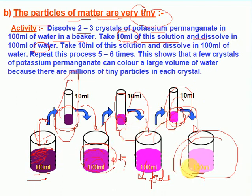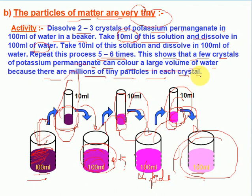Repeat this process five to six times. This shows that a few crystals of potassium permanganate can color a large volume of water because there are millions of tiny particles in each crystal. Even after repeating the dilution five to six times, the water still shows color — demonstrating how extremely tiny the particles of matter are.